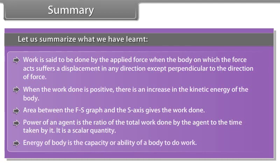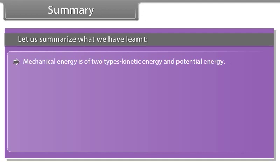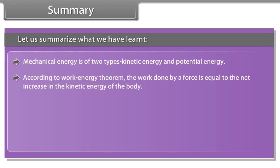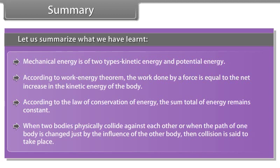Energy of a body is the capacity or ability of a body to do work. Mechanical energy is of two types: kinetic energy and potential energy. According to work energy theorem, the work done by a force is equal to the net increase in the kinetic energy of the body. According to the law of conservation of energy, the sum total of energy remains constant. When two bodies physically collide against each other, or when the path of one body is changed just by the influence of the other body, then collision is said to take place.